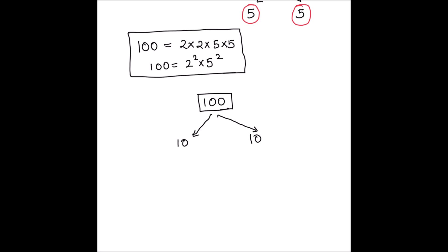This 10 can be broken down into two factors which are 5 and 2 — five times two is ten. And on the other branch, five times two is ten as well.